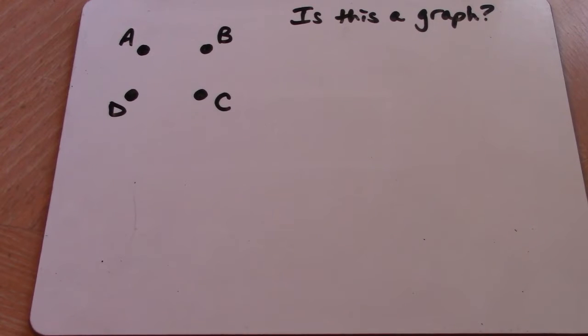Now here on the screen you see four vertices labeled A through D, and a question: is this considered a graph?